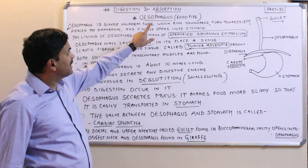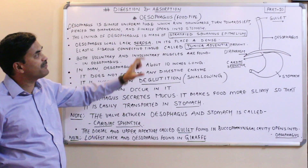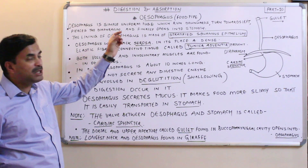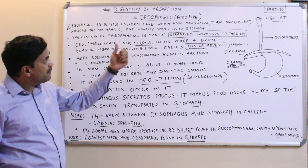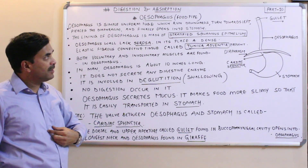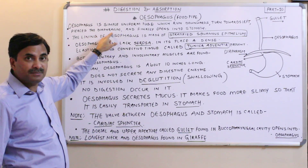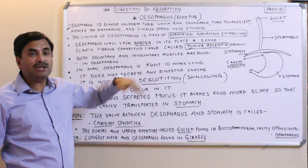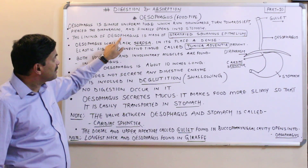Today we are discussing the esophagus, or the food pipe part of our alimentary canal. The esophagus is a simple uniform tube — it has the same diameter throughout its length. It runs downward from the pharynx region, turns towards the left, pierces the diaphragm, and ultimately opens into the stomach.